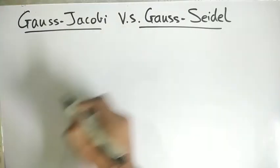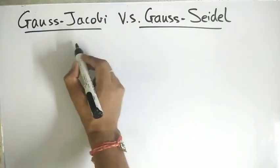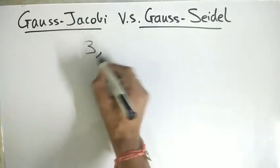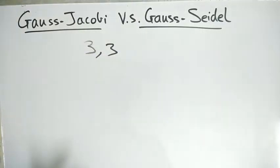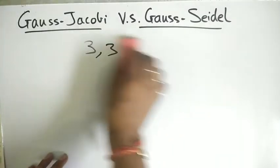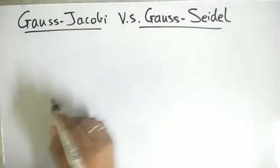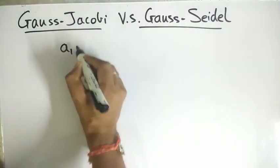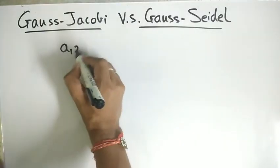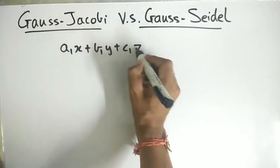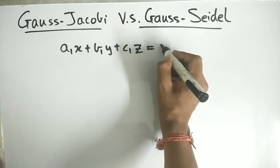So what does Jacobi mean? First of all, we have here three equations. Suppose we have three equations and three variables, and we need to solve the three equations to get three variables using these two methods. What we do here is consider the equations. Let's take a1x plus b1y plus c1z equal to d1, the first equation.